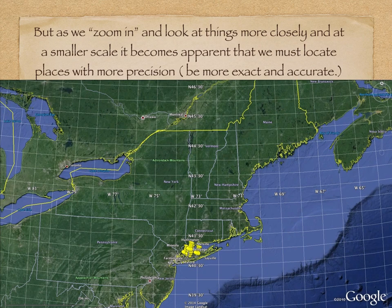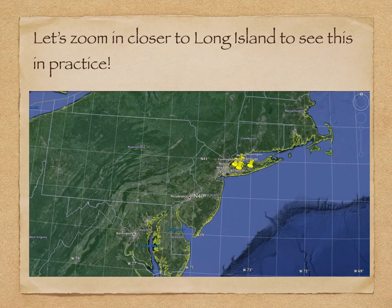However, as we zoom in and look at things more closely, and at a smaller scale, it becomes apparent that we must be able to locate places with more precision. And precision means to be more exact and accurate. So we're going to zoom in closer to Long Island to see this in practice.